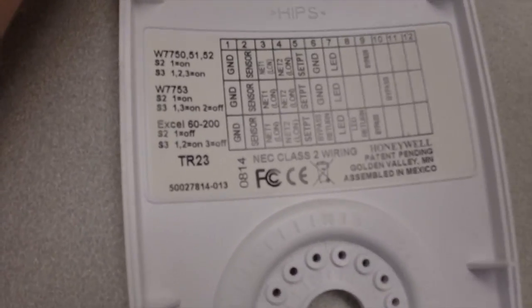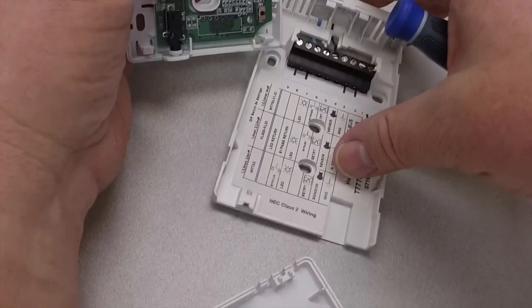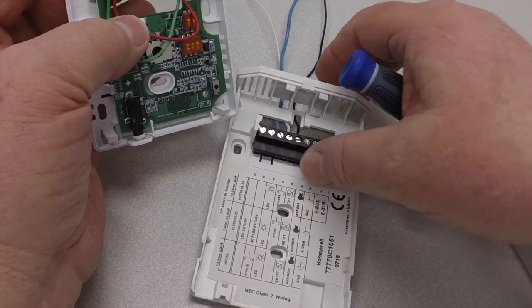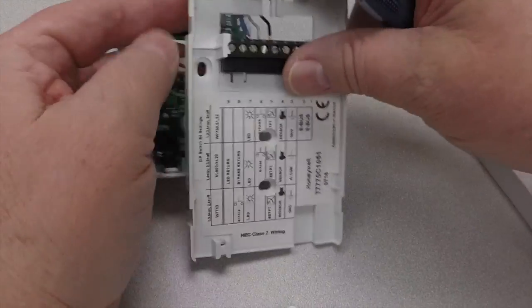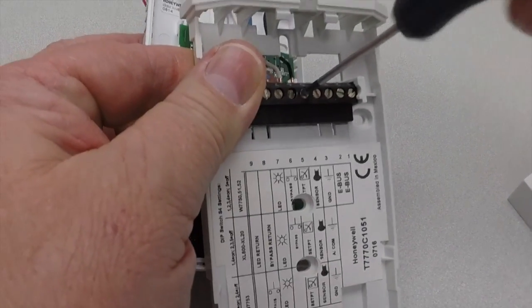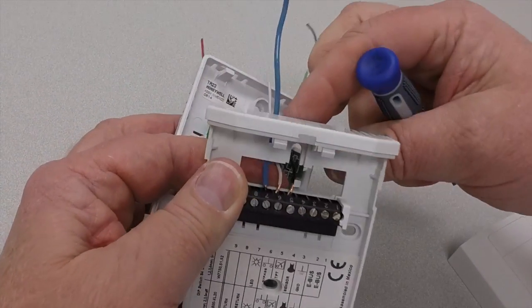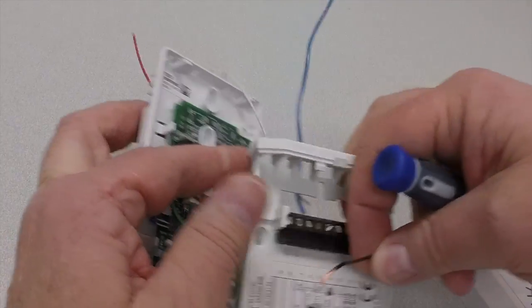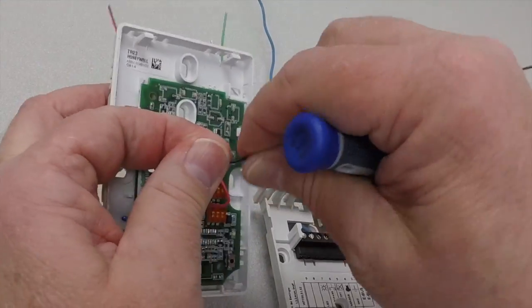The setpoint is number five on the old one and setpoint is number five on the new one. The bypass is number six on this one.